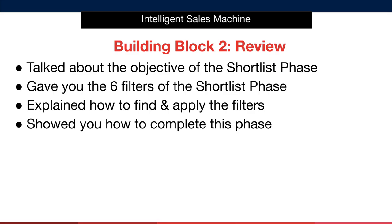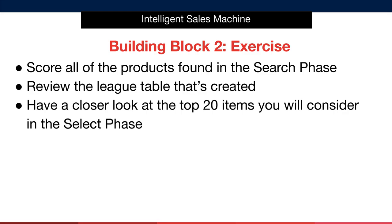Your exercise in building block 2 is to score all of the products found in the search phase, then review the league table that's created. Items will then move into the next phase, which is called select. I want you to have a closer look at the top 20 items with the highest scores that you will consider in the select phase.